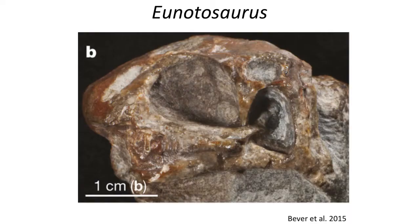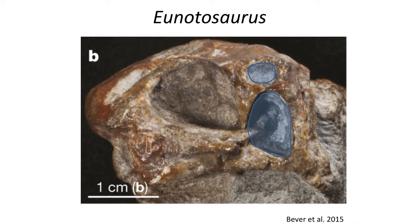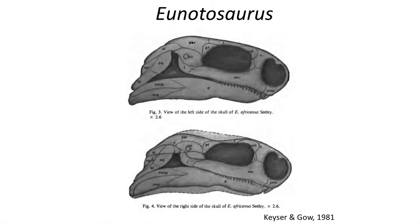A juvenile specimen of Eunotosaurus with a nicely preserved skull was described in 2015, which showed that in the juvenile skulls of Eunotosaurus there was an upper temporal fenestra, and a lower temporal fenestra was likely opened up with age on the ventral edge to appear like the parareptile condition. As the skull matured, the upper temporal fenestra was closed off and the lower temporal opening opened up on the ventral edge. This ontogenetic change in the skull hid the two temporal fenestra in adult skulls, and was evidence that Eunotosaurus was in fact a diapsid reptile pretending to be an anapsid.